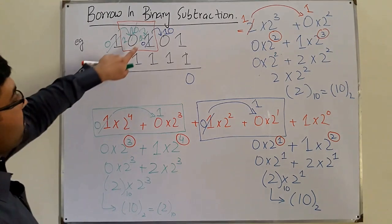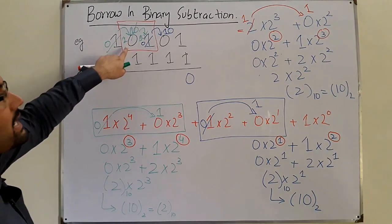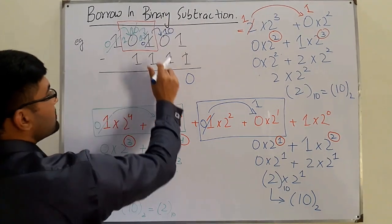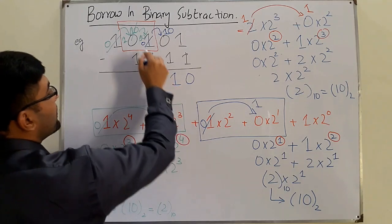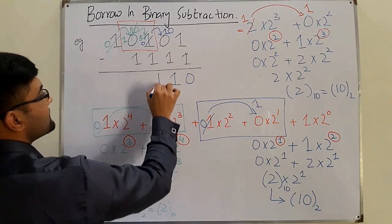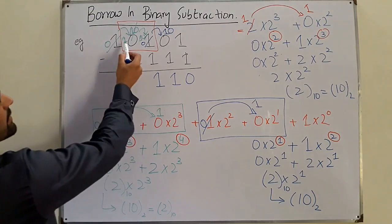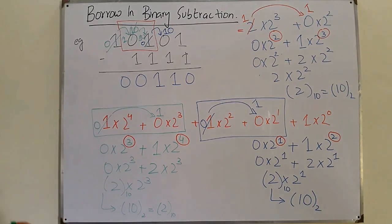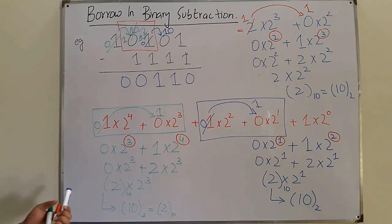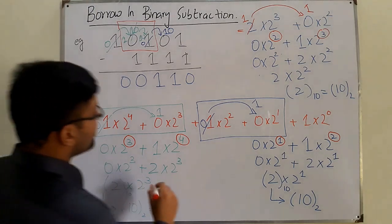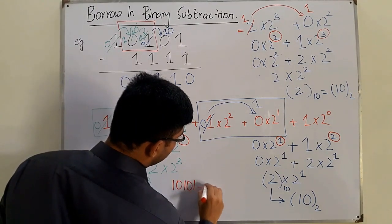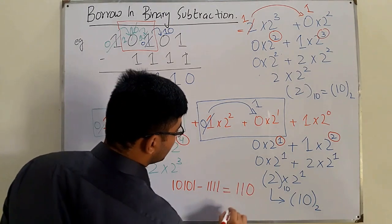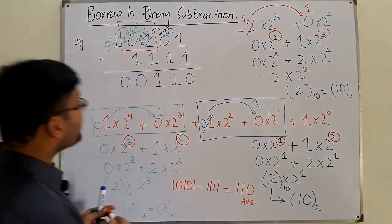Now this becomes 2 and the other is left to be 1. We do the subtraction: 2 minus 1 is 1, so 10 minus 1 is 1. Over here 10 minus 1 is again 1. Then 1 minus 1 is 0, and this was left to be 0. Neglecting the leading zeros, we write: 10101 minus 1111 equals 110. That's the answer.